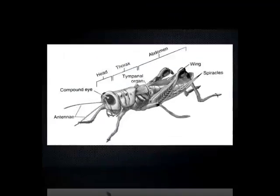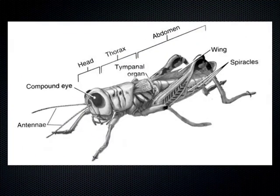You'll have to know the tympanum. Just another view of the antenna, the compound eye, head, thorax, abdomen — and here's the tympanum. It's a soft little membrane just underneath the wing. Tonight at home, to complete your lab, there's also a video posted online of somebody going through some of the external anatomy of a grasshopper, so if you get home and you're working on it...